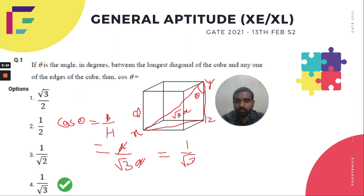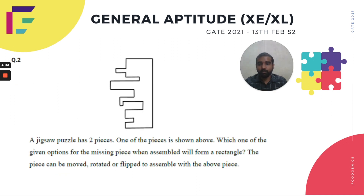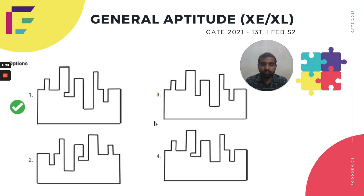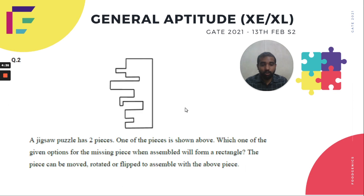The next question is a jigsaw puzzle with two pieces — one piece is shown above. Which of the given options for the missing piece, when assembled, will form a rectangle? The piece can be moved, rotated, or flipped. In this type of question we have to go by the options and use the elimination method to remove the least significant answers.